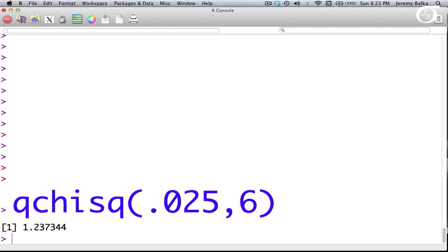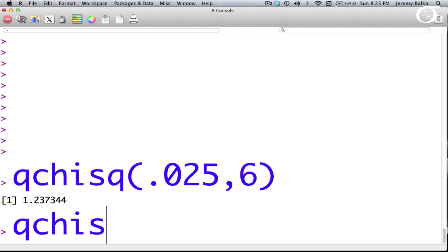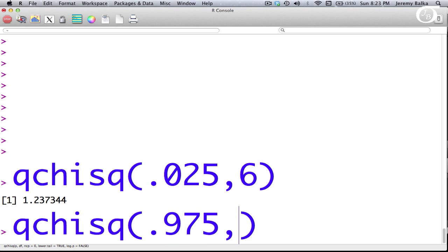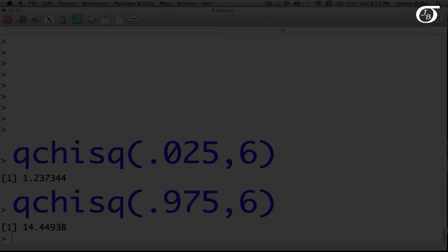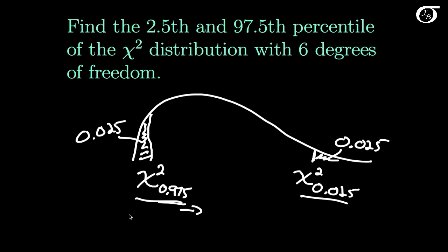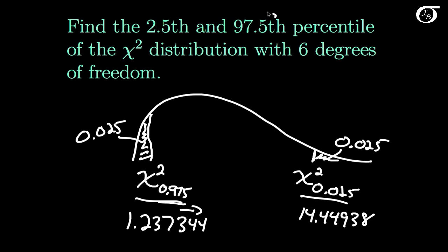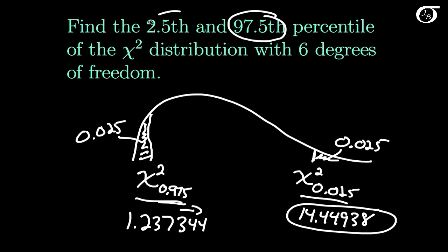And if I want the 97½ percentile, I simply use the command qchisq with 0.975 and 6 degrees of freedom. Now I've got the two values I need. R has told me that the 2½ percentile is 1.237344, and the 97½ percentile is 14.44938.